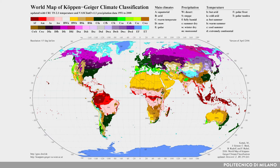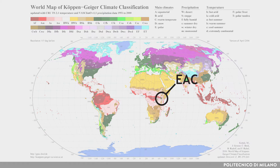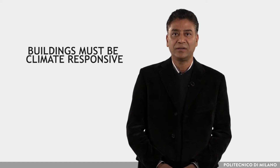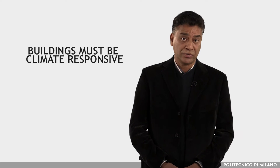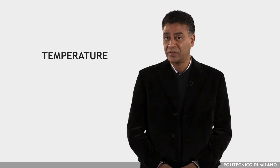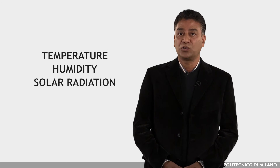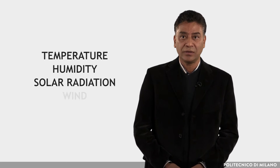Existing classifications of the climatic zones of EAC countries are based on the same concept. Buildings, to be low energy and sustainable, must be climate responsive. Both buildings and vegetation are best suited to the environment according to climatic parameters such as temperature, humidity, solar radiation, and wind.